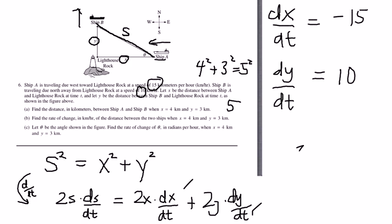Let's see if that makes sense. Yes, they're getting closer, because ship B is leaving at a slower rate than ship A is approaching.